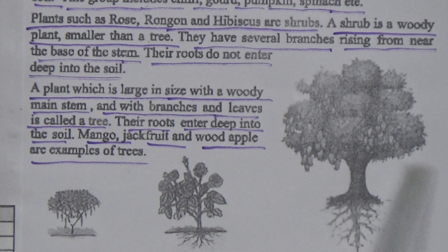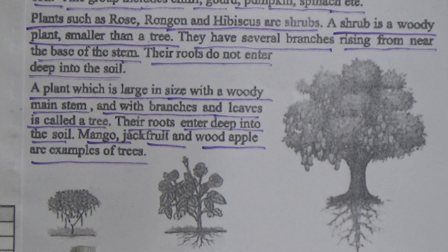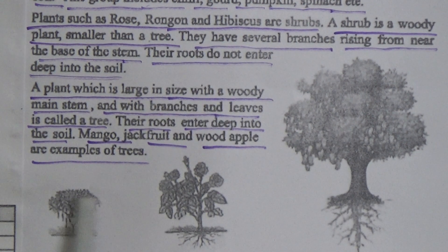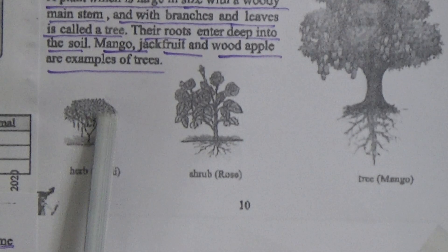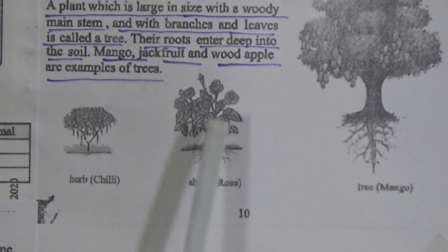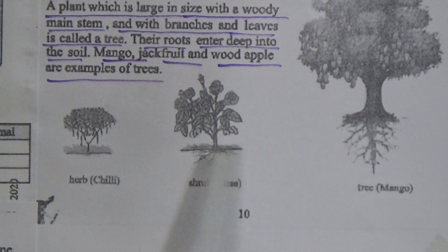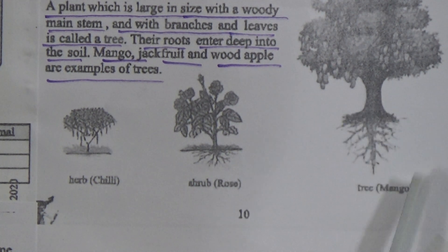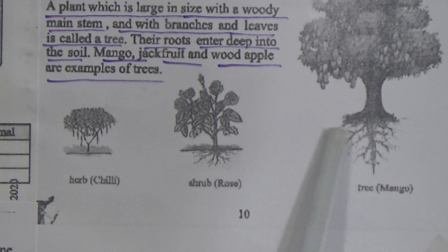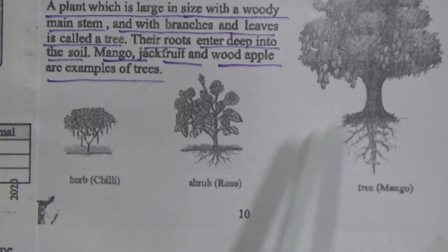See here: chili is the example of a herb. Rose is the example of a shrub. And mango is the example of a tree.